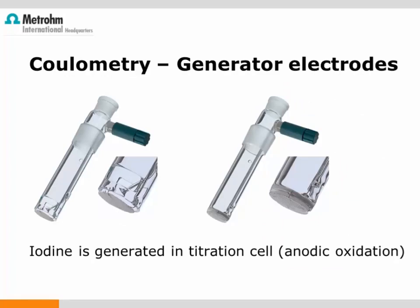Coulometric Karl Fischer titration is the second type. It is not a classical titration — there is no titrant added to the titration cell. The iodine required for the titration is produced by a generator electrode by anodic oxidation. An electric current applied to the generator electrode releases iodine from the iodide-containing reagent. The titrator measures the time and current flow required to reach the endpoint. According to Faraday's law, the product of time and current is directly proportional to the amount of generated iodine and therefore to the amount of water.